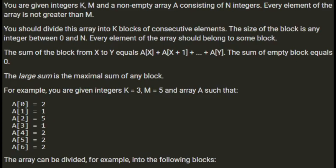You're given integers k and m, and a non-empty array A consisting of n integers. Every element of the array is not greater than m. You should divide the array into k blocks of consecutive elements. The size of a block is any integer between 0 and n. Every element of the array should belong to some block. The sum of a block from x to y equals A[x] + A[x+1] + ... + A[y]. The sum of an empty block equals 0. The large sum is the maximum sum of any block.